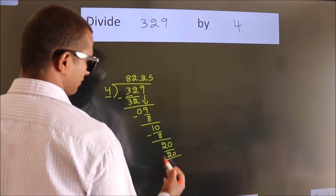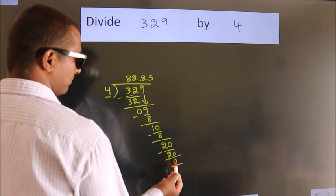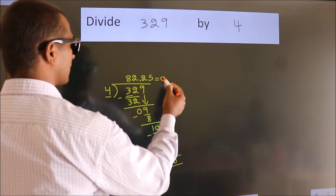Now, we subtract. We get 0. We got remainder 0. So, this is our quotient.